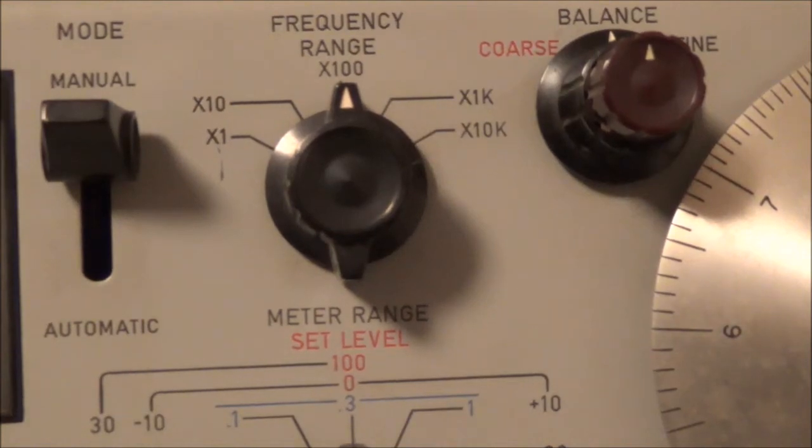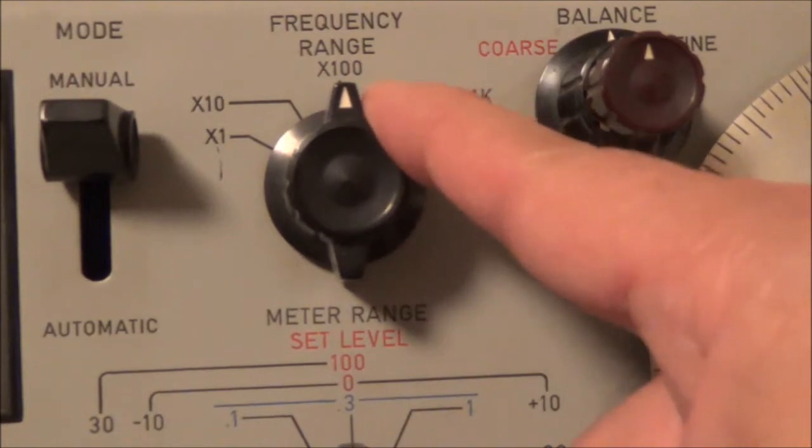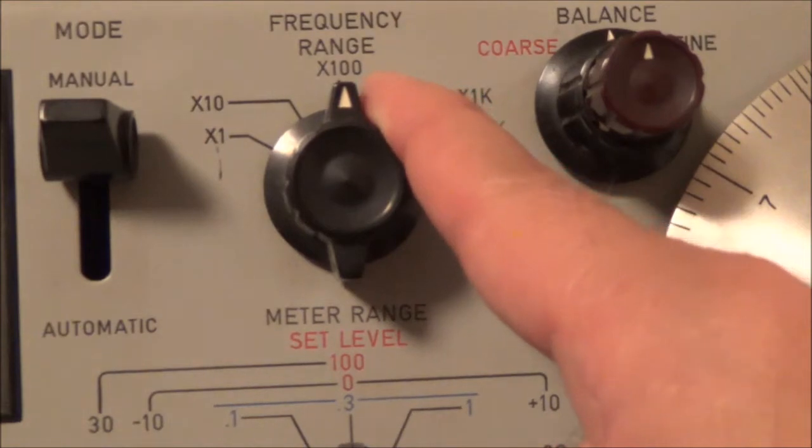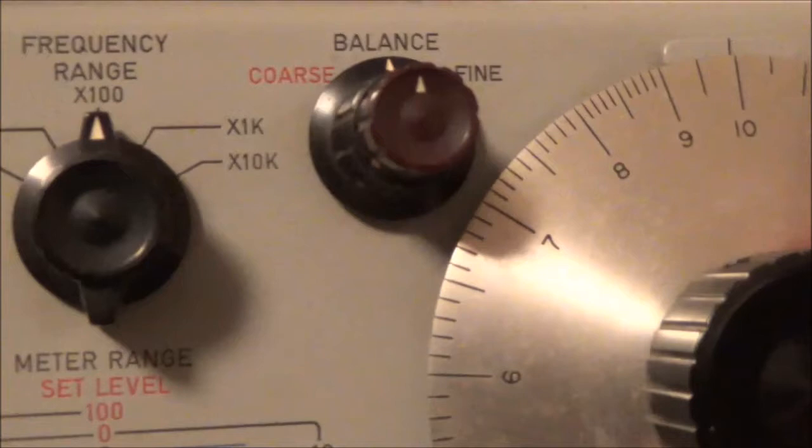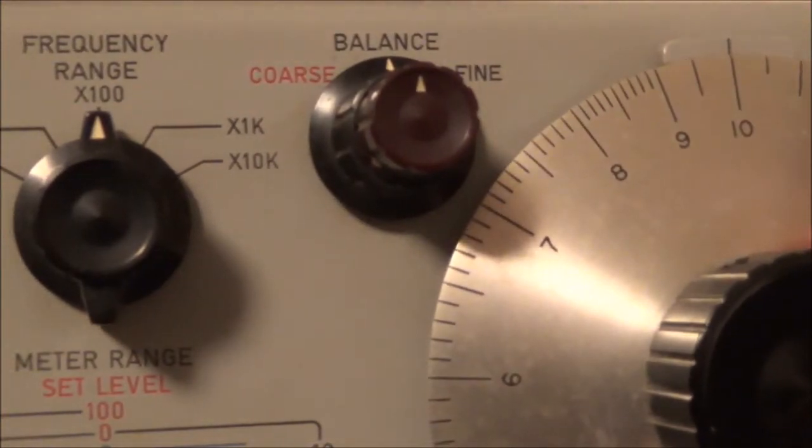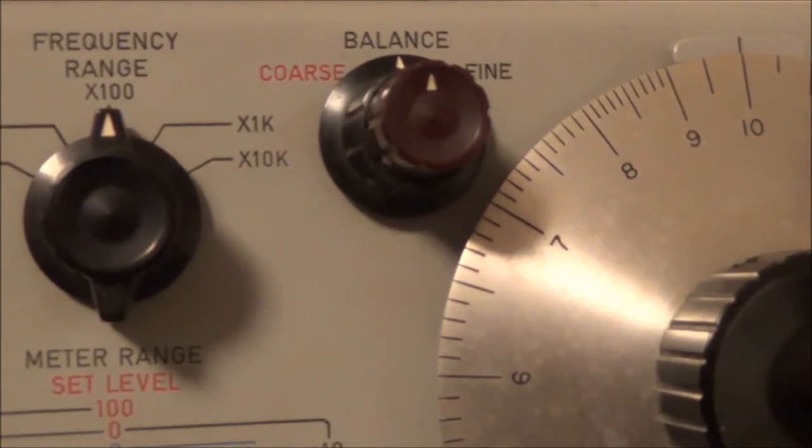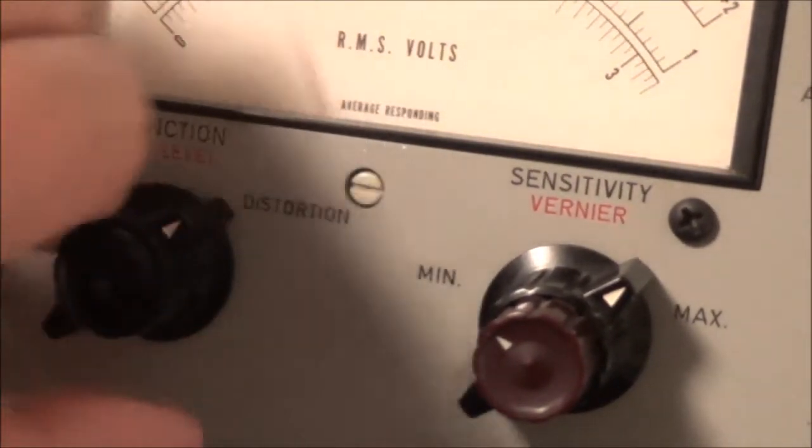So now we want to take the frequency range switch and we want to put that in the right position. That's the times 100 here. And here's the frequency dial. So we had to take the 10 times the 100, which would then give us exactly a thousand. So we've already got this on a thousand already. Next we switch this over to distortion here.